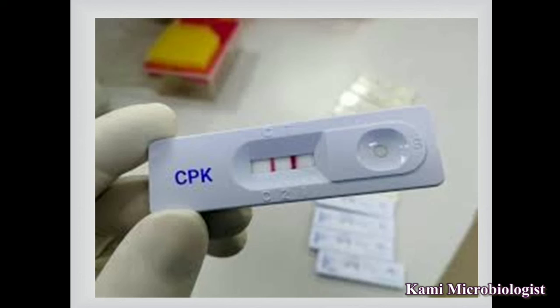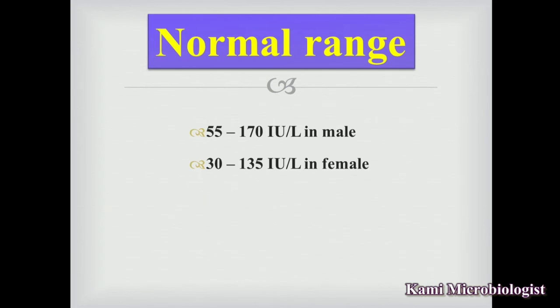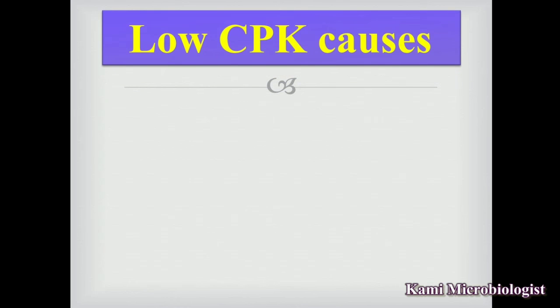When using the kit it will show you the quantity. The normal range for this test is 55 to 170 international units per liter in males, and 30 to 135 international units per liter in females.